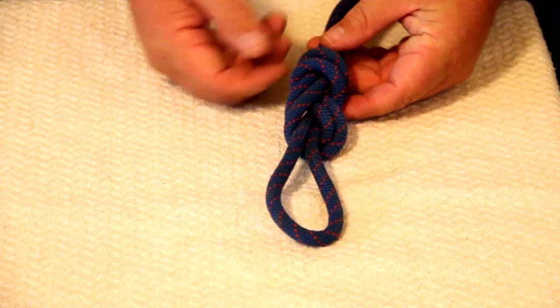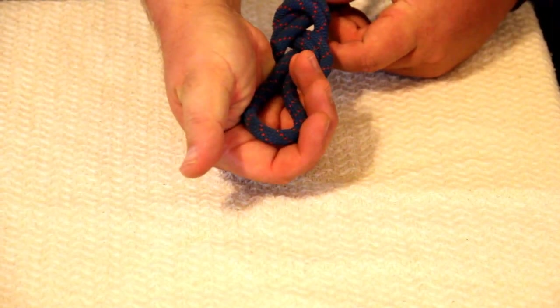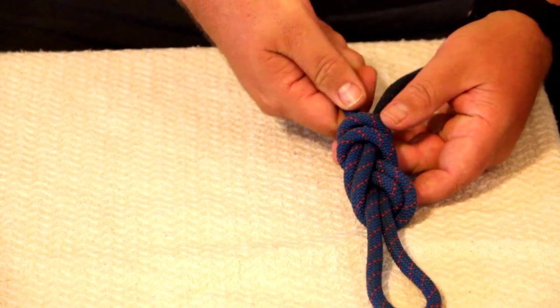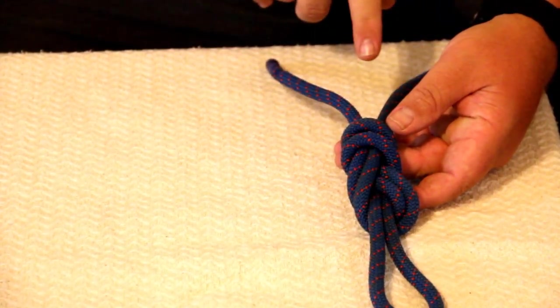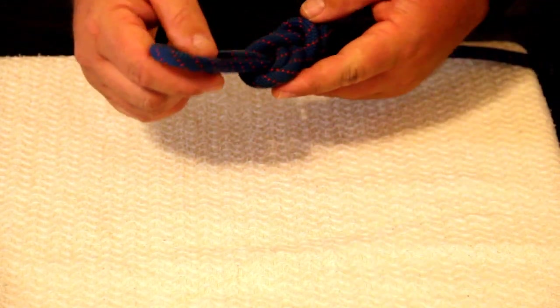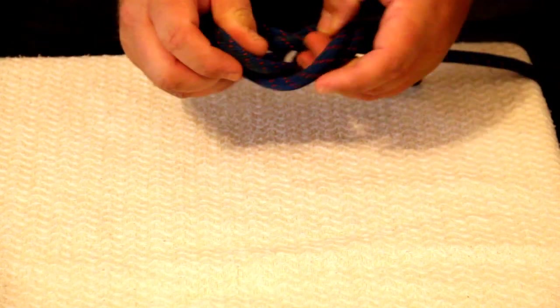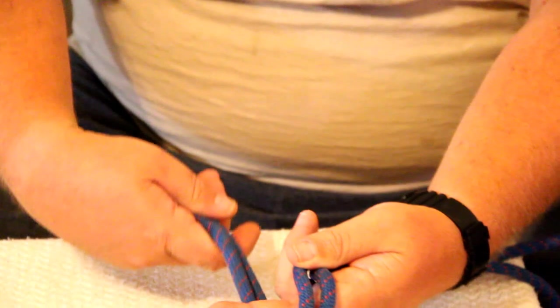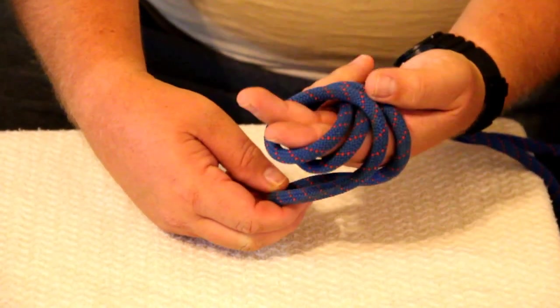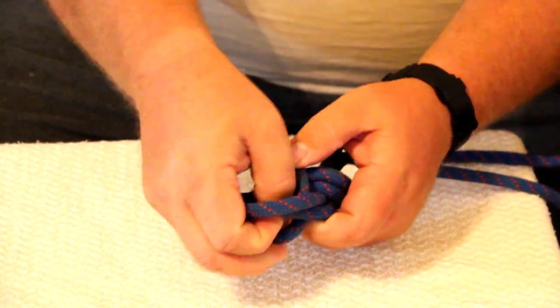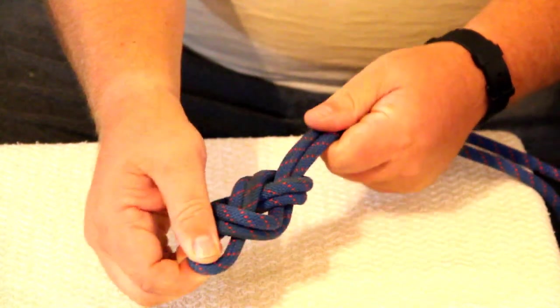Now, the other thing we want to look for in a good knot is to make sure that we have less than a fist length of rope here. So we don't want anything farther than a fist length. Now on the other side, we want a minimum of a fist length. But we always put a safety knot in here. We're going to do that a couple more times to show you guys.